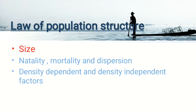Due to environmental changes, population also changes. These changes can be biological or ecological. The biological environmental factors that affect the population are natality, mortality, and dispersion. Natality is the birth rate, mortality is the death rate, and dispersion refers to movement from a particular place. There are also density-dependent and density-independent factors — these are the ecological factors that affect population dynamics.